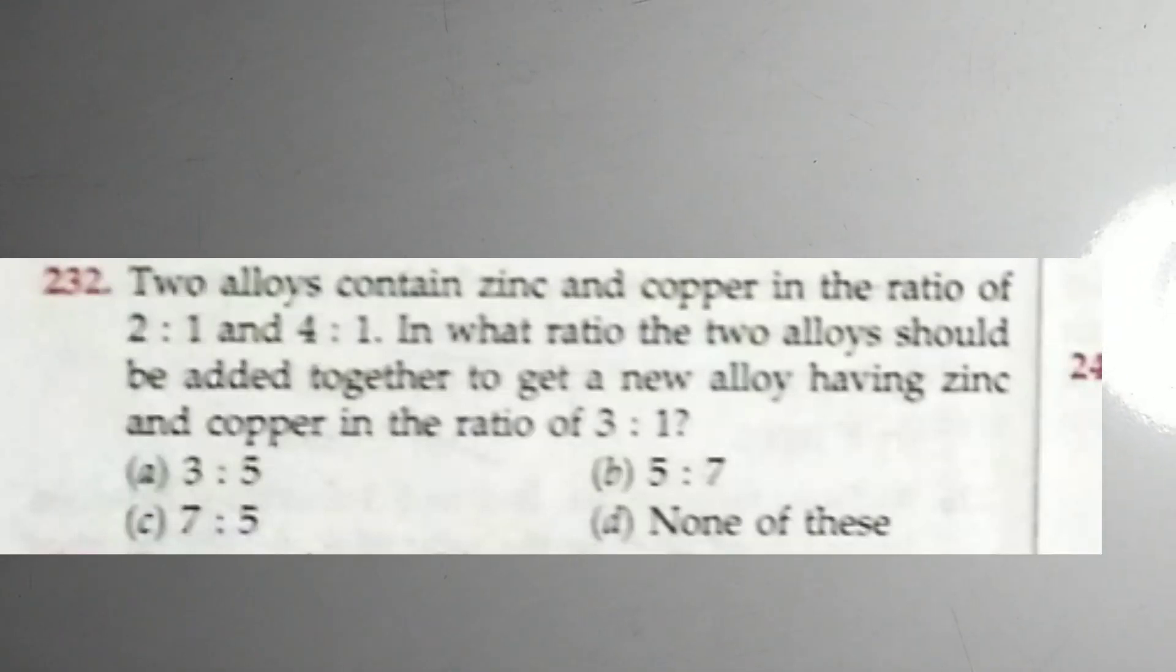Question number 232: Two alloys contain zinc and copper in the ratio 2:1 and 4:1. In what ratio should the two alloys be added together to get a new alloy having zinc and copper in the ratio 3:1?